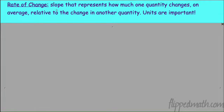Rate of change is slope — it represents how much one quantity changes on average relative to the change in another quantity, and the units are important. It's essentially the same calculation as slope: find two points and calculate. The labeling differs slightly, and we may use decimals rather than fractions since these are real-world situations. You wouldn't say 'two-thirds miles per gallon.'